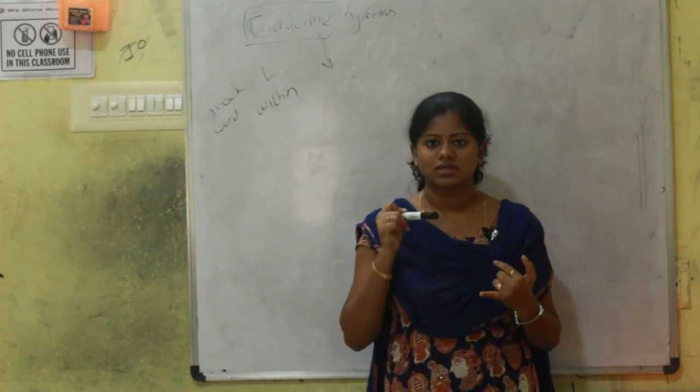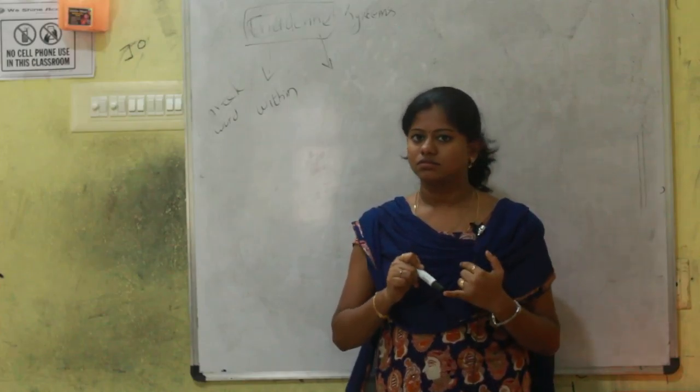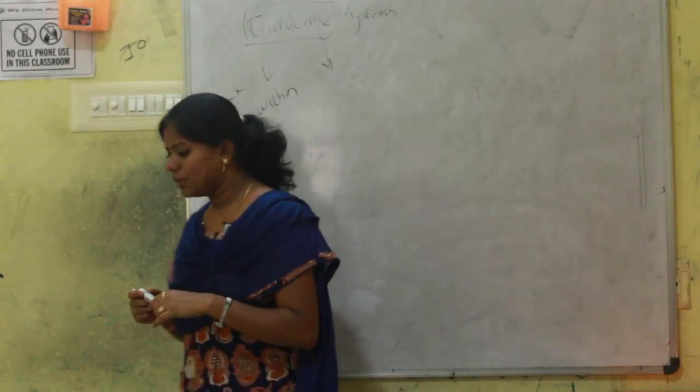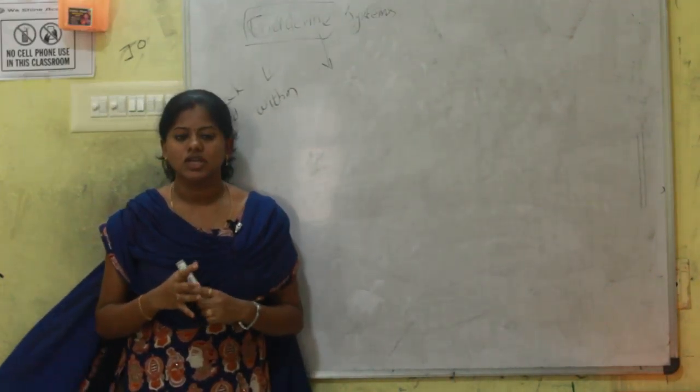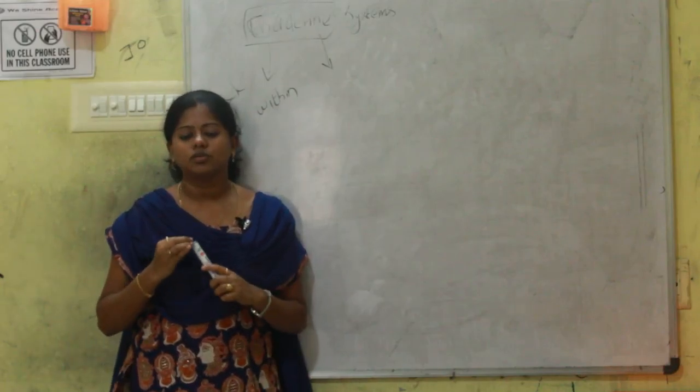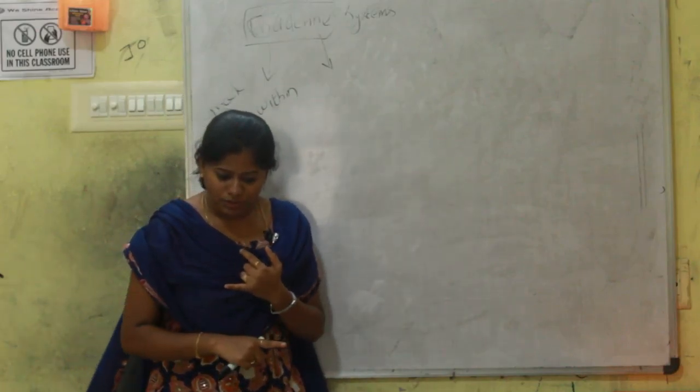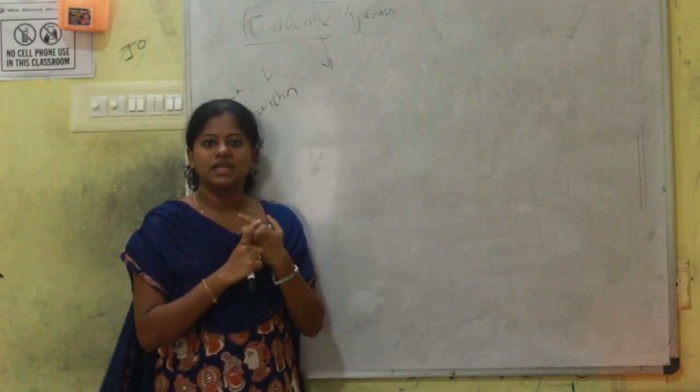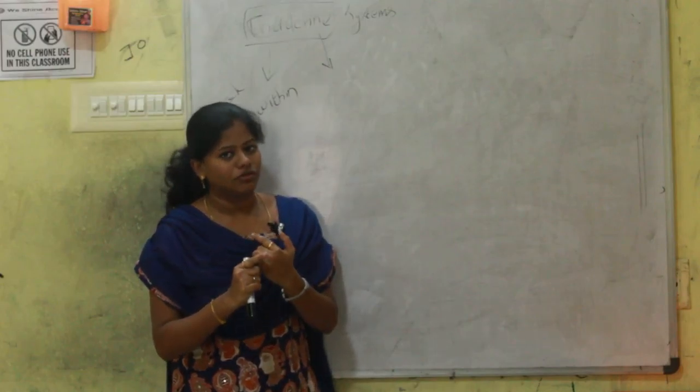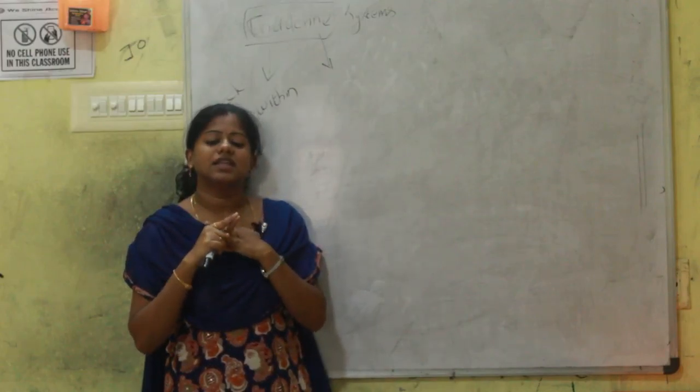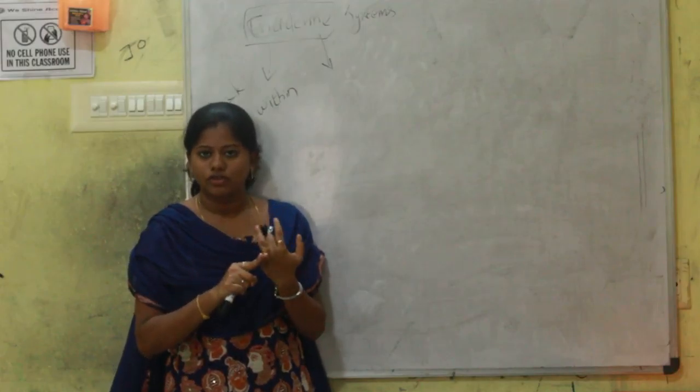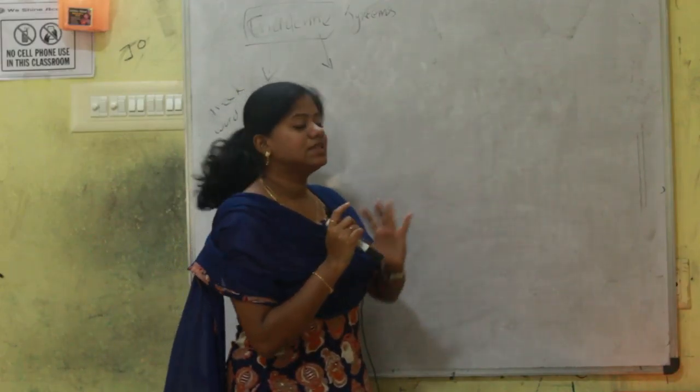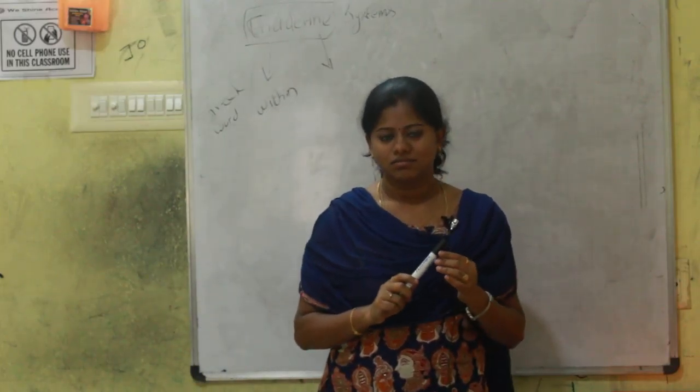This hormone is mandatory to control or manage since it controls our body metabolism. Two things to remember: thyroid gland helps in maintaining the metabolism of the body, and it secretes thyroxin hormone. These two are the main keywords from thyroid gland under endocrine system. Thank you.